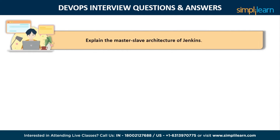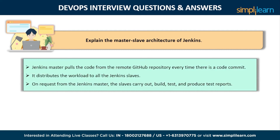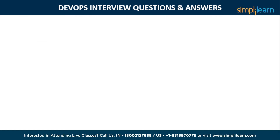The next question is: explain the master-slave architecture of Jenkins. Jenkins master pulls the code from the remote GitHub repository every time there is a code commit. It distributes the workload to all the Jenkins slaves, and when requested from the Jenkins master, the slaves carry out builds, tests, and produce test reports.